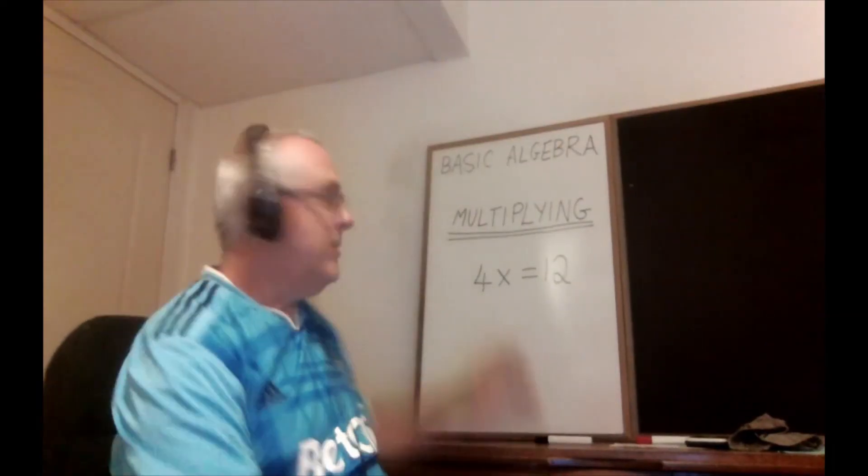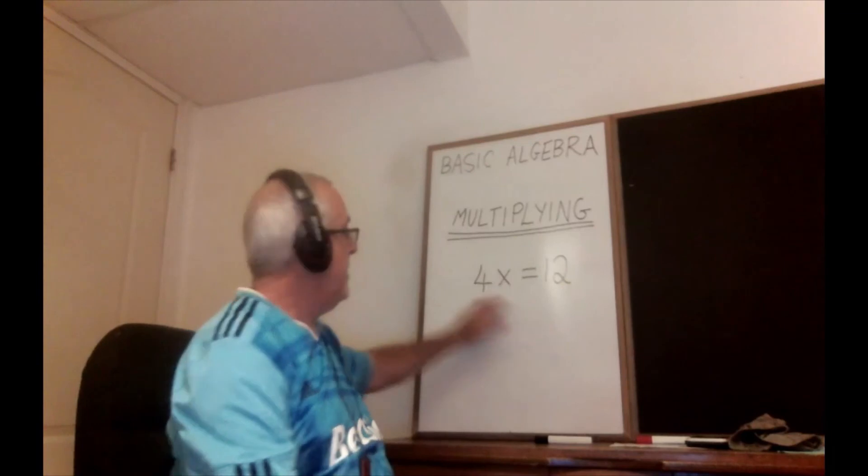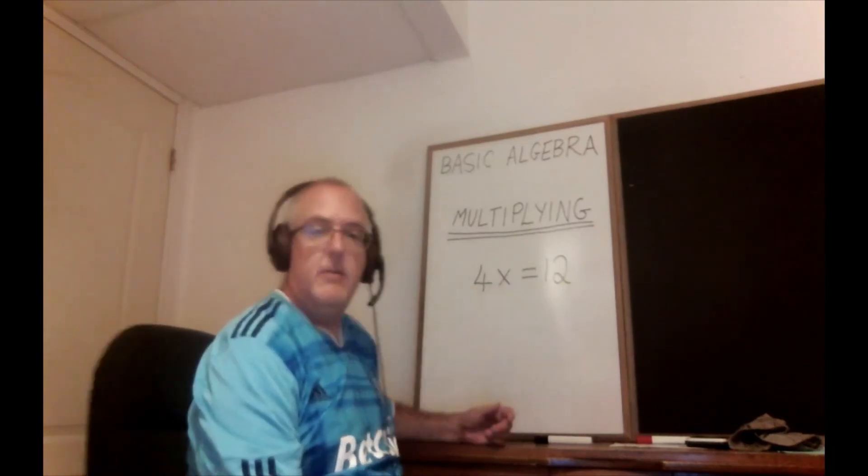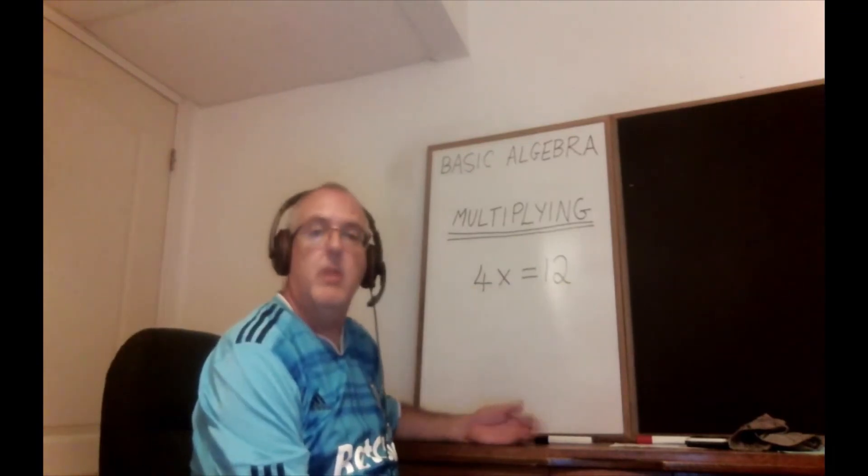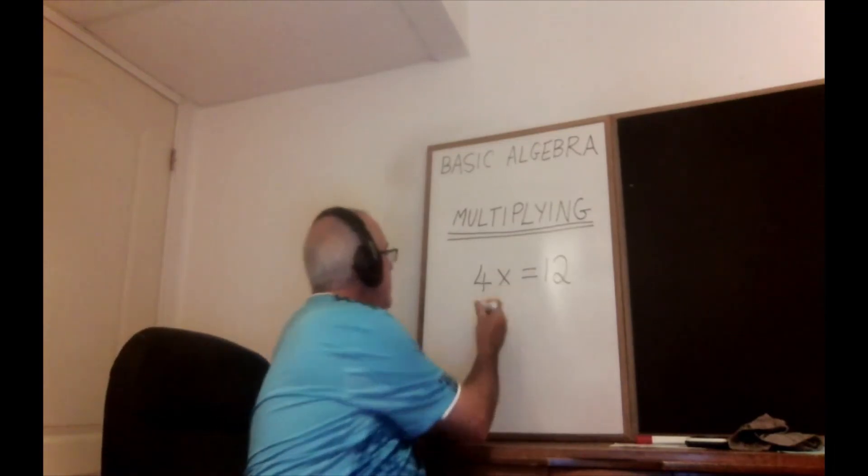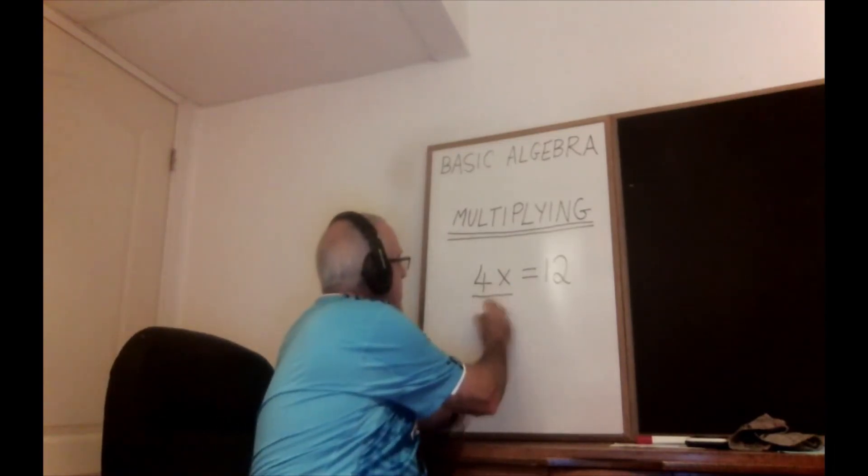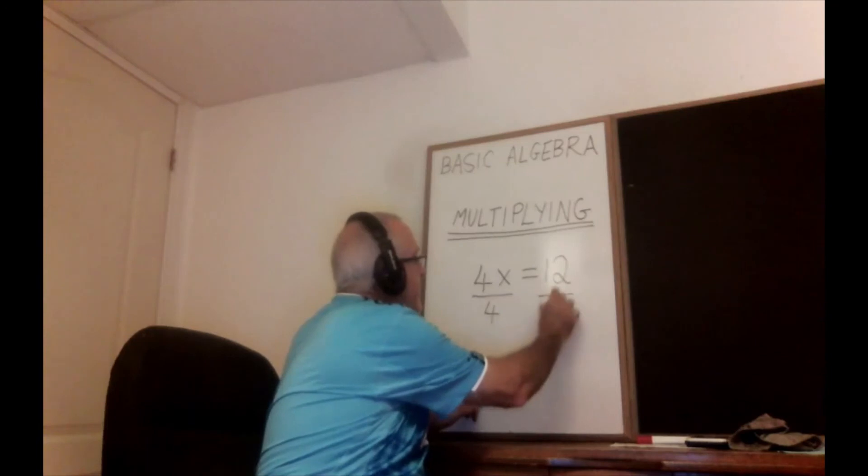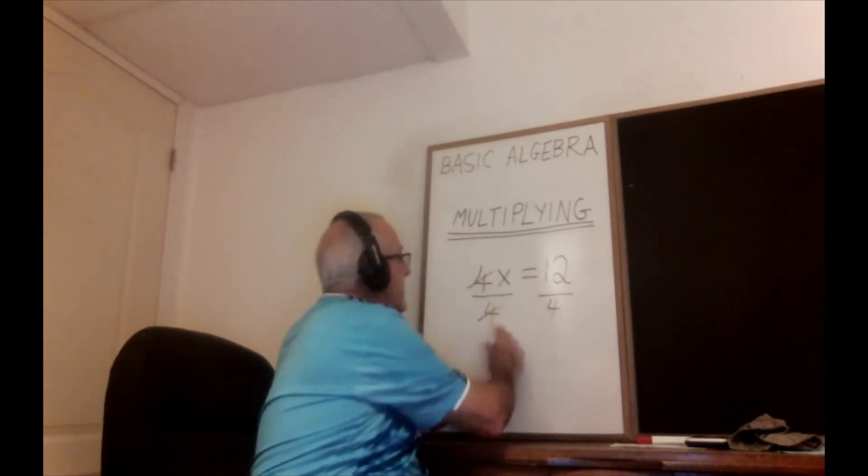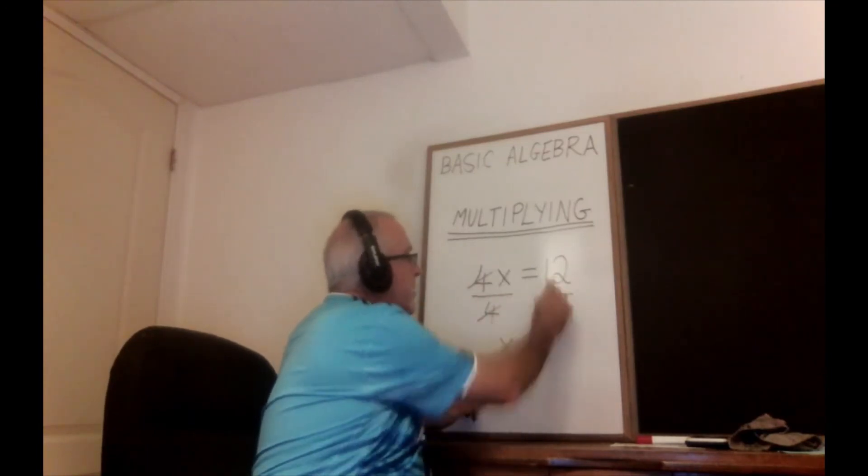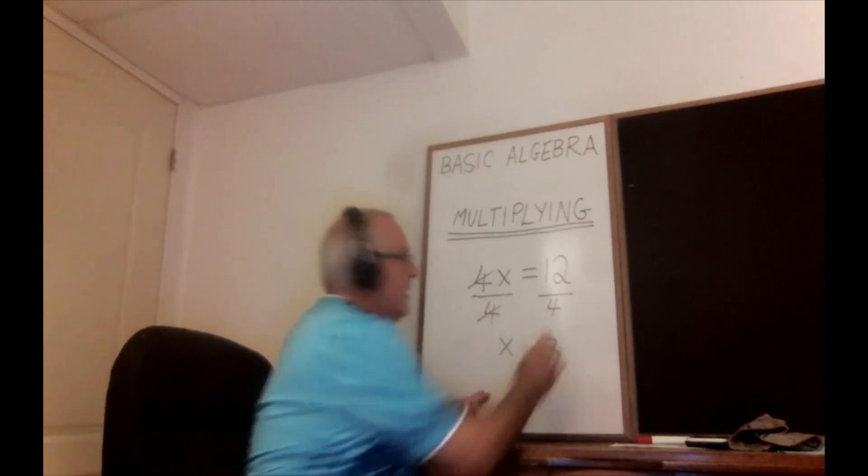So now of course we can do our original example. We have 4x equals 12. My x is not alone, it's being multiplied by a 4. So I do the opposite. I divide both sides of the equation by 4. These cancel. x is isolated. 12 divided by 4 is 3. I have my answer.